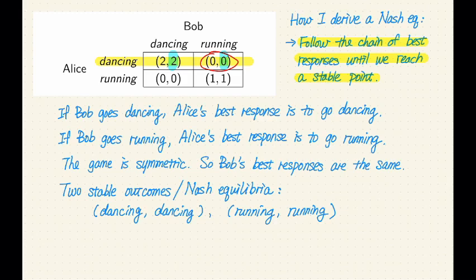Now, because of this, we are going to switch Bob's strategy from running to dancing. That means we'll switch from the profile dancing running to the profile dancing dancing. So now we have this new profile and we just improved Bob's strategy so that Bob's strategy is the best response to Alice's strategy.